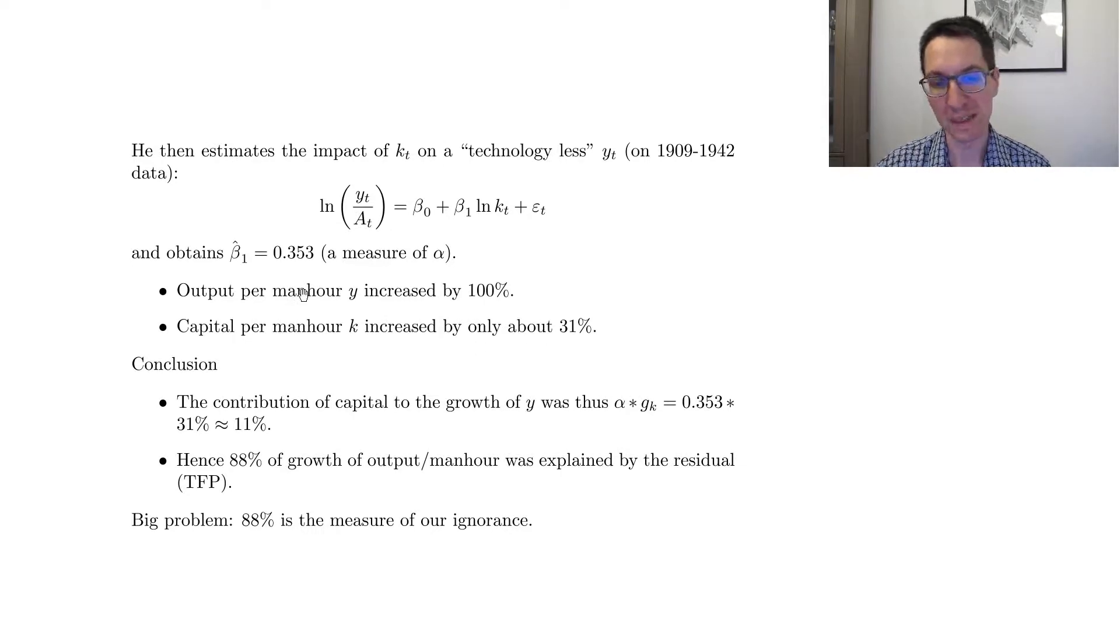So then, well, that's his exercise. So in a sense, it's confirming what we already guessed, but his point, the point and why it's a famous article is the following. So over the total period 1909 to 1949, so output per man hour, y, has increased by roughly 100%, so 104%. But capital per man hour, k, has increased by only 31%.